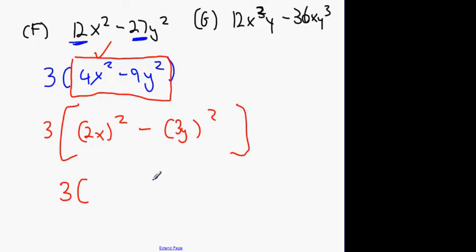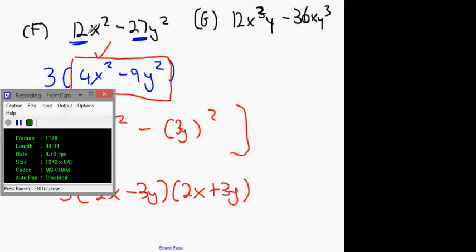3. Multiply by? 2. 2. 2x. Yeah. Yeah. And? 2x plus 2. 2x plus 3. 2x plus 3y. 2x plus 3y, okay? Alright guys, so look, that's factored out.